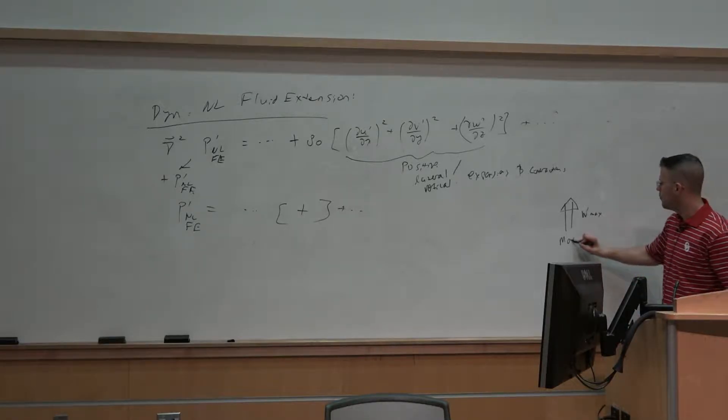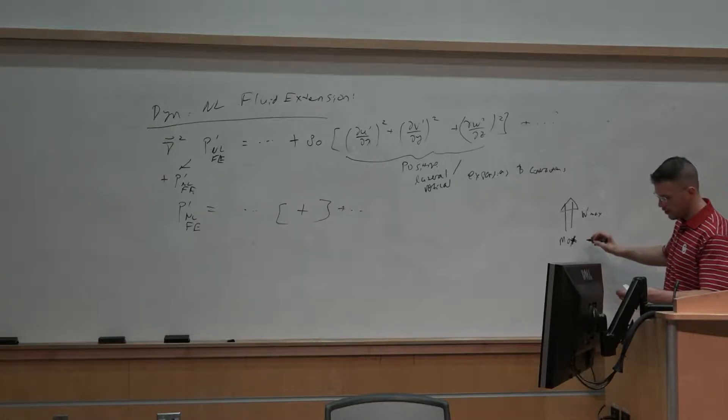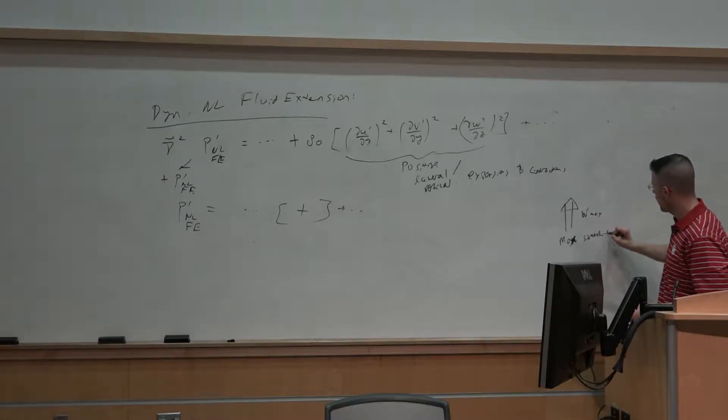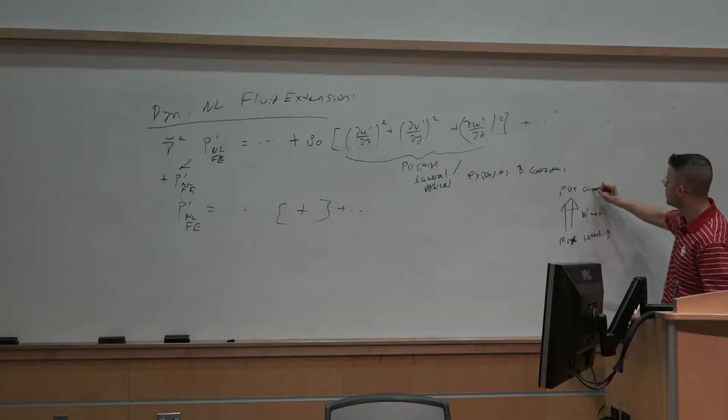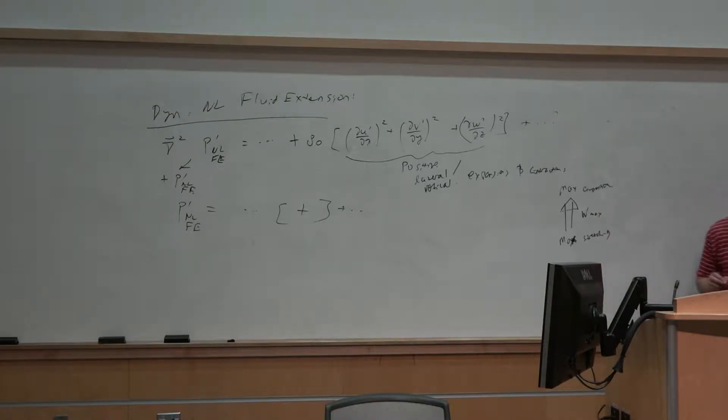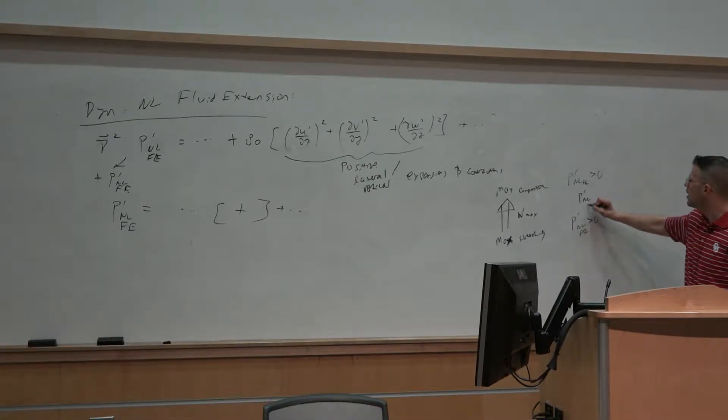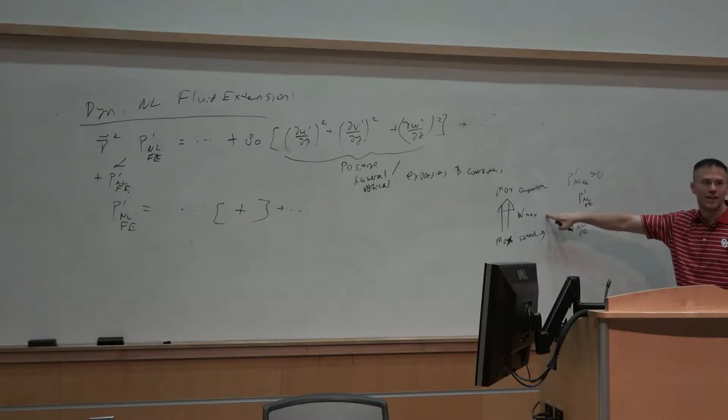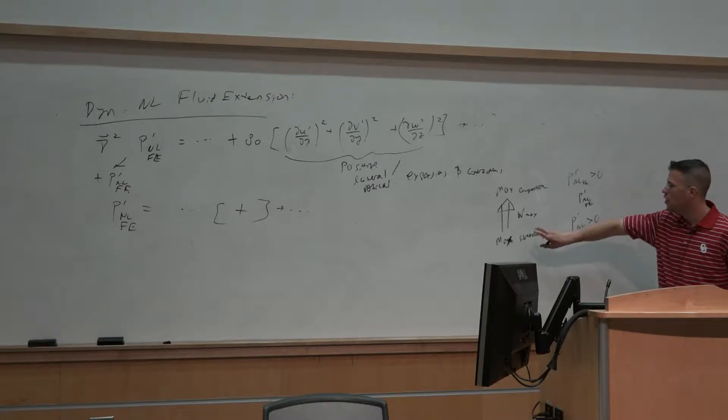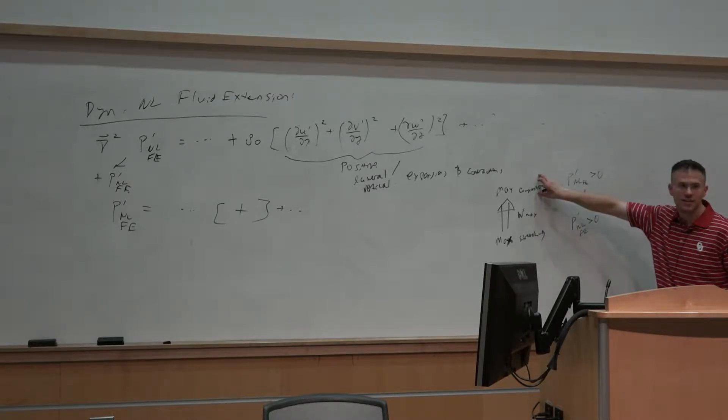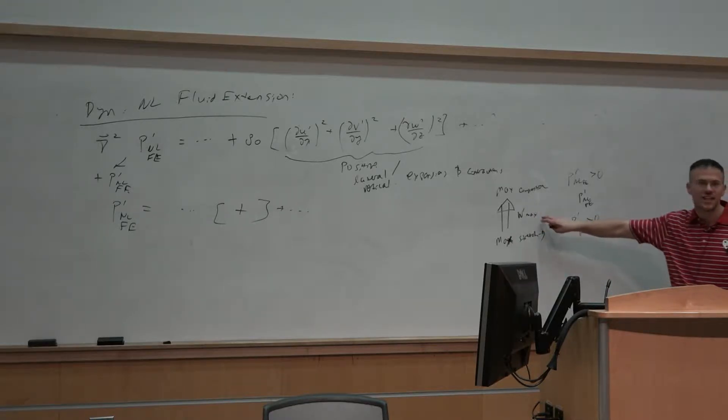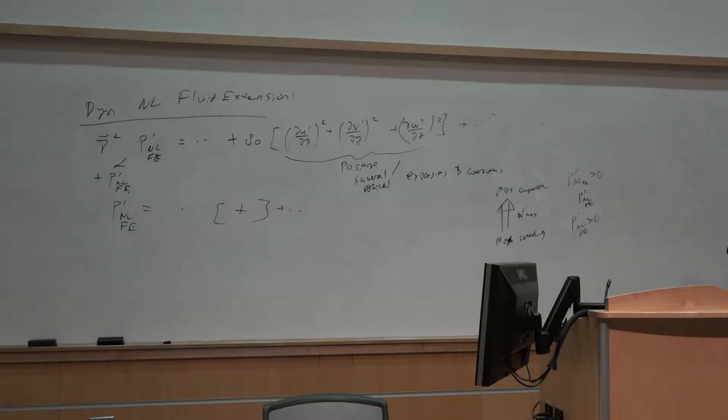Beneath that maximum updraft over here, we're going to have stretching, max stretching. And over here, we're going to have maximum compression take place. And in each of those cases, we will have p prime nl fe is going to be greater than zero. And right here, where our maximum perturbation vertical velocity is, we will have no p prime nl fe since we're at the maximum. You can think of some function over here where you have max extension over here, max extension over here, and then in between we're having this relative minimum in the extension where the updraft perturbation vertical velocity is maximized. That is going to be associated with a zero value for our p prime nl fe.